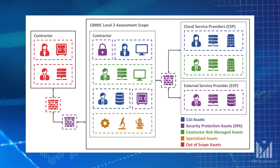Specialized assets are in scope but are only required to be documented. They include assets that may or may not process, store, or transmit FCI or CUI. The red-colored items are out-of-scope assets. They cannot process, store, or transmit CUI because they are physically or logically separated from the CUI assets, or are inherently unable to do so.